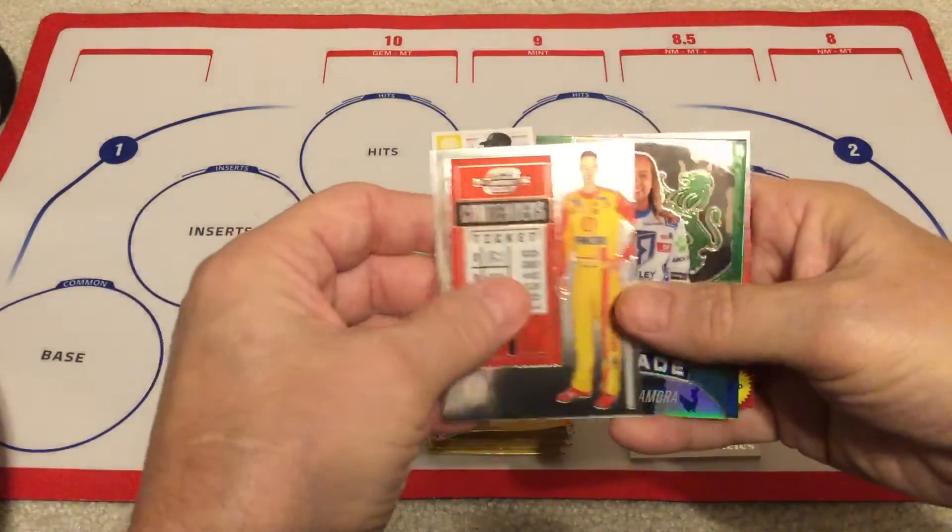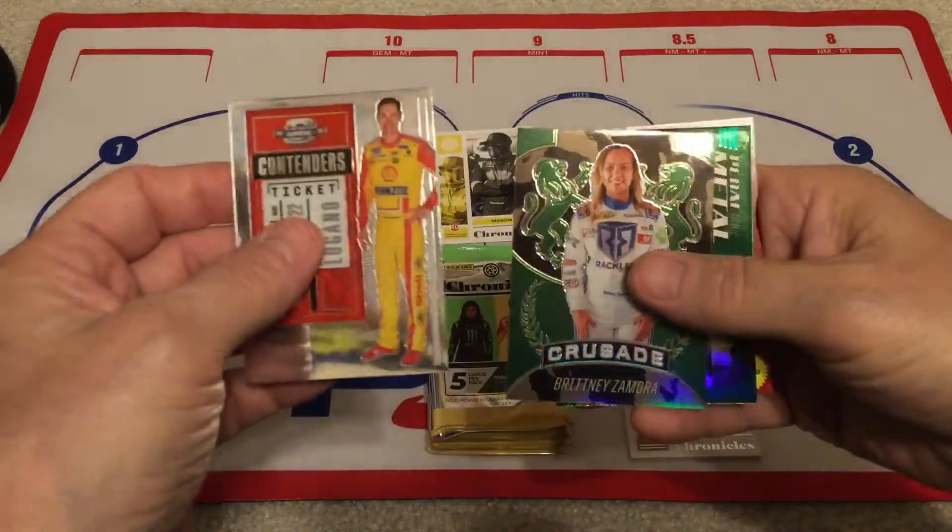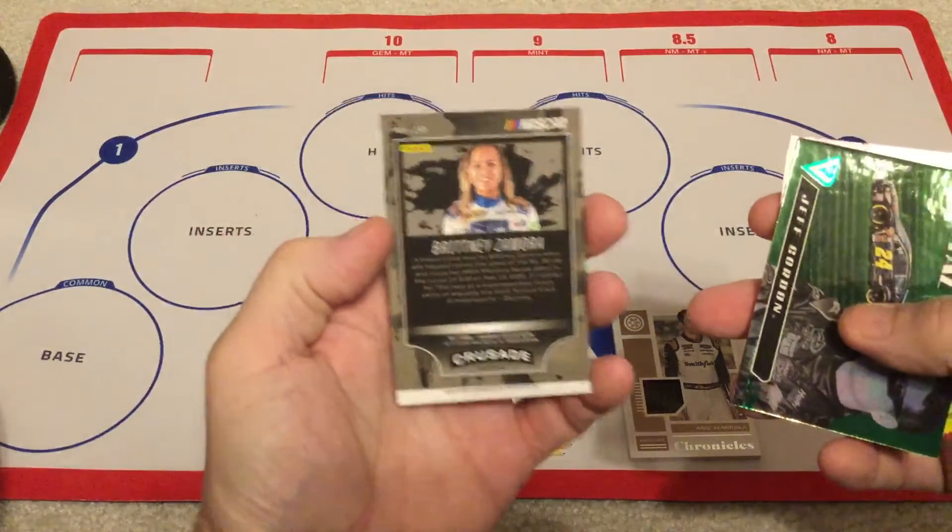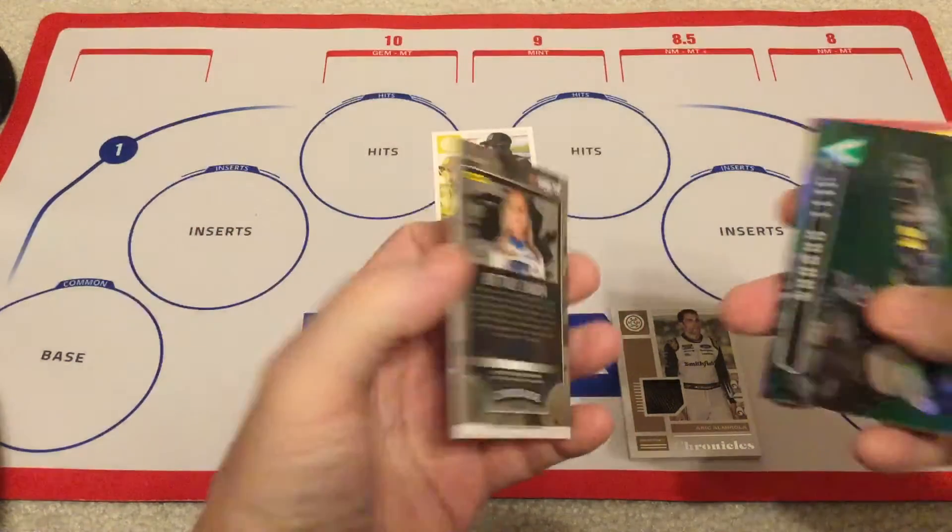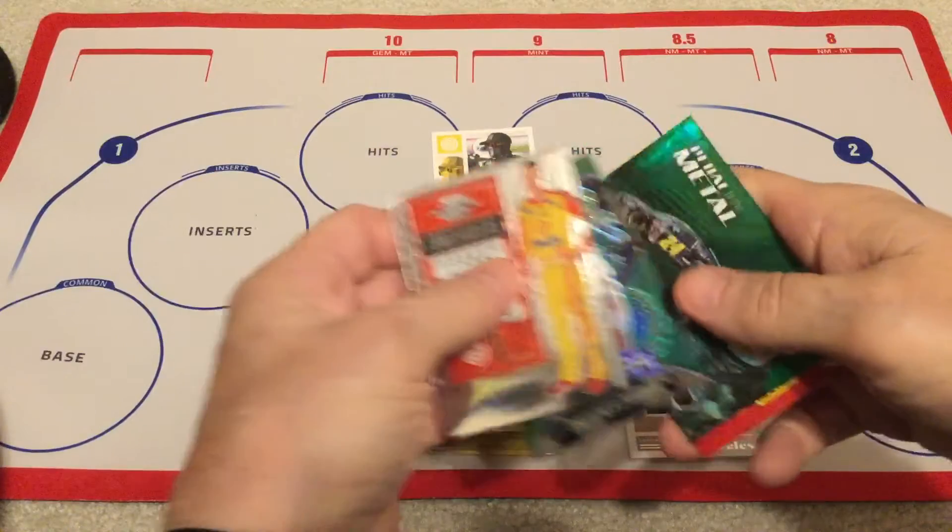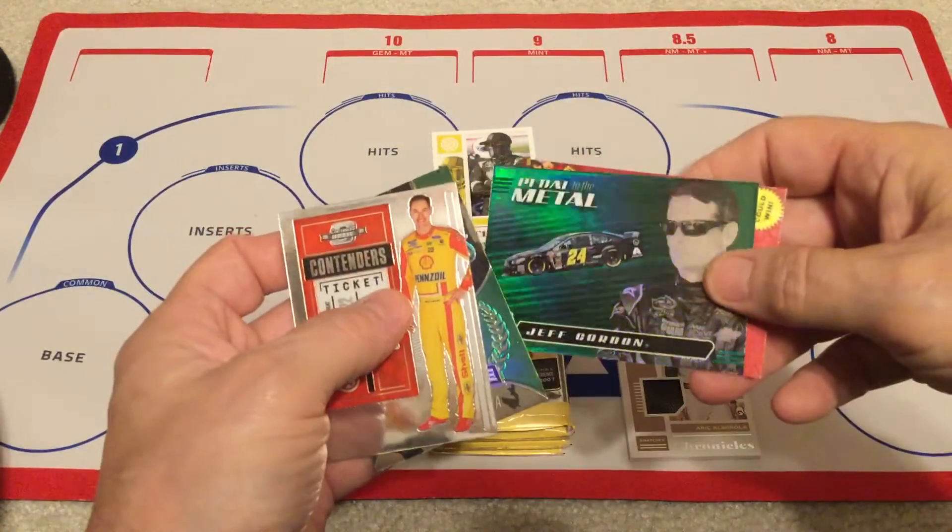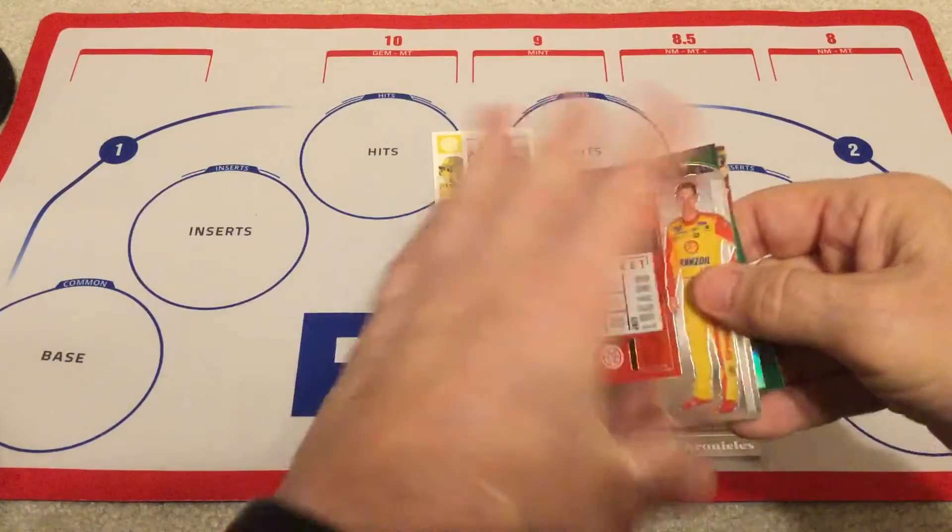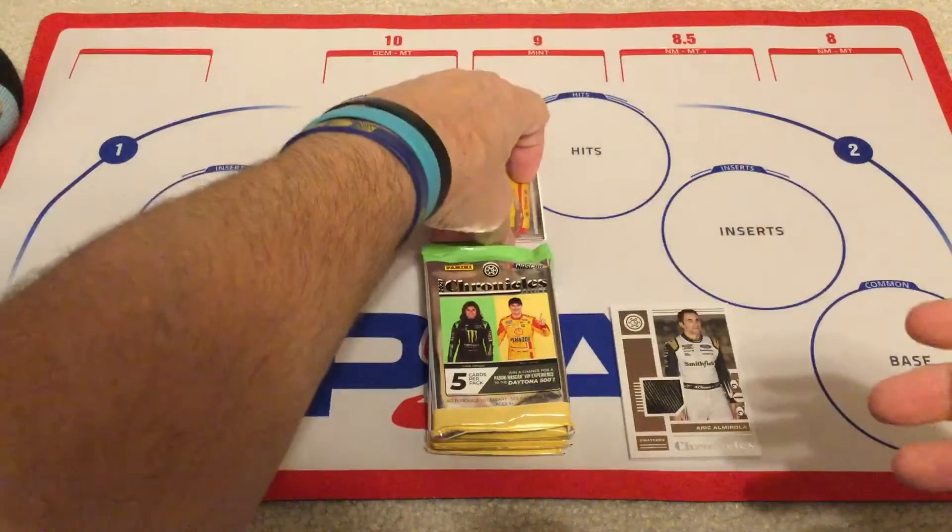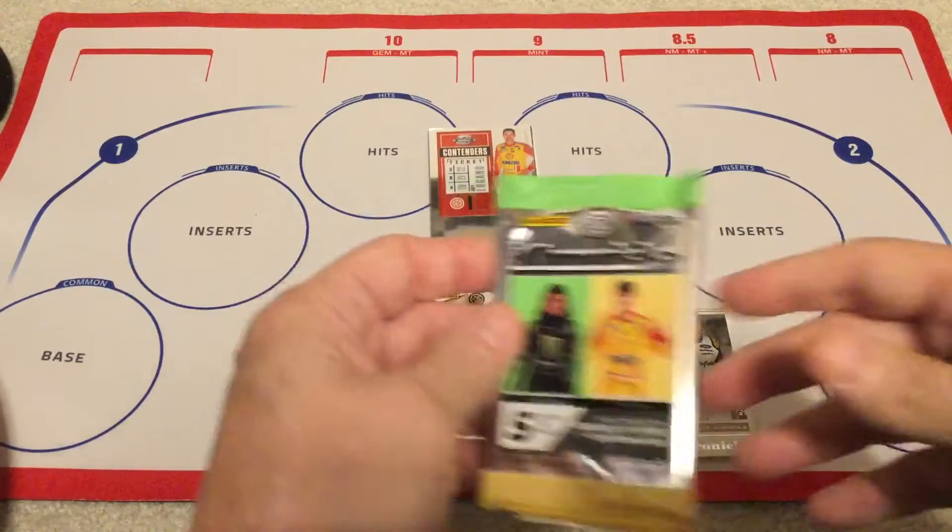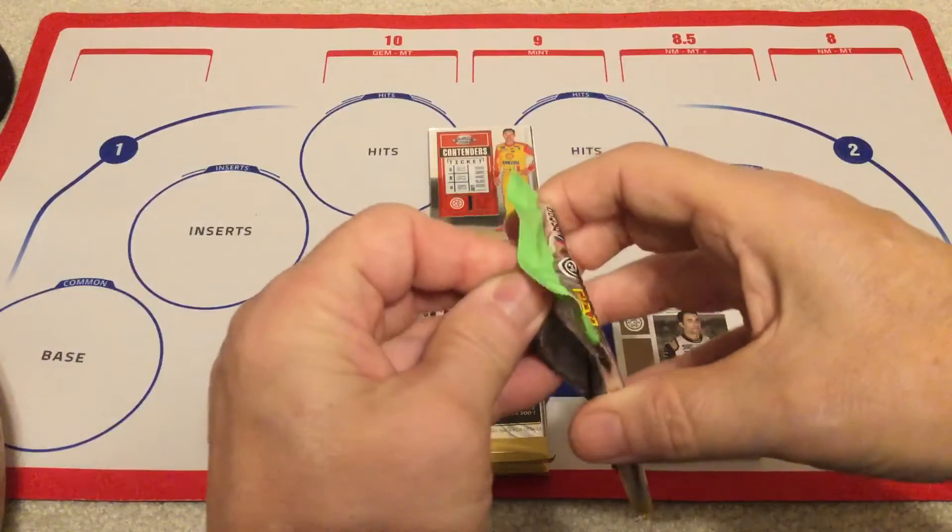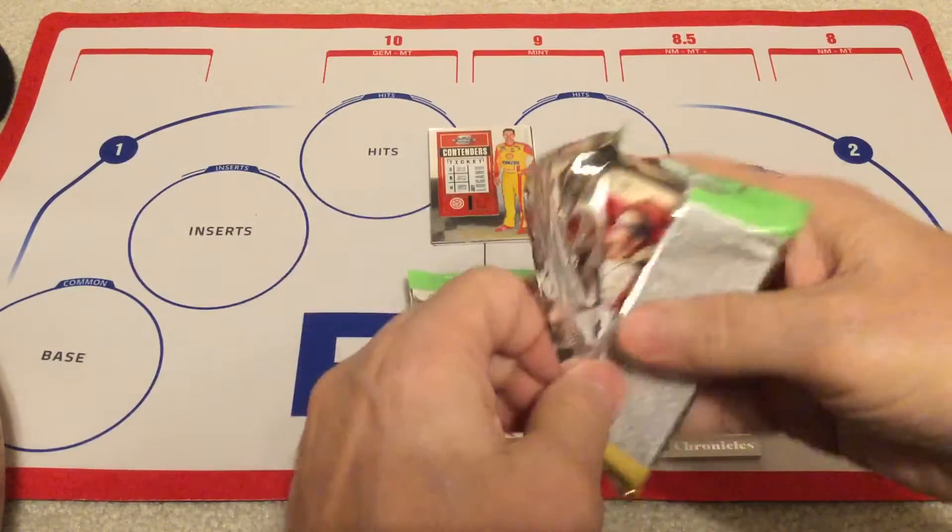So looking at the rest of the pack, there's Joey Logano. Oh cool, there's a green Brittany Zamora, I don't think those are numbered. And there's a green pedal to the metal of Jeff Gordon. He is new to Panini this year, I'm glad they finally got Jeff. So maybe now they've got Jeff, maybe they'll get Dale Earnhardt. I'm not gonna hold my breath though.